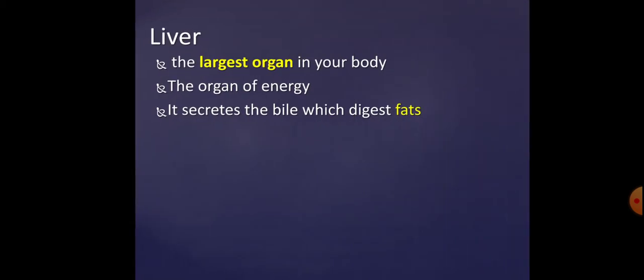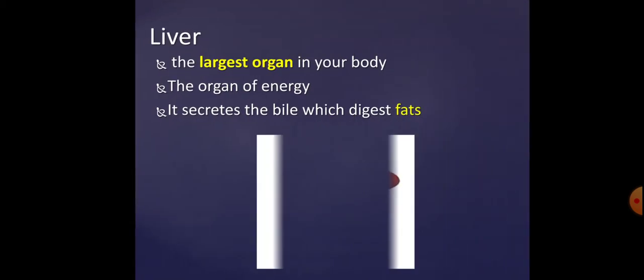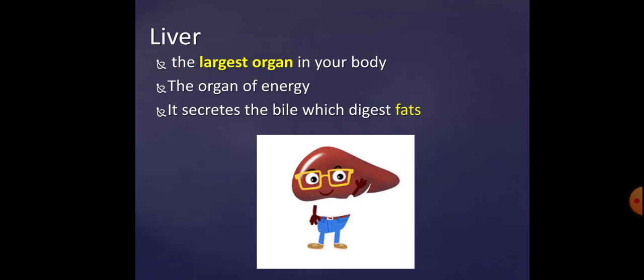The liver is the largest organ in our body. It gives us energy and secretes a juice called bile. Bile is a liquid secreted from the liver that helps digest fats.